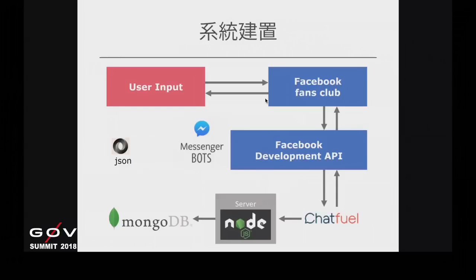資料正規化之後，我們要想辦法讓系統開發成一個資訊系統。除了標準的網頁查詢介面之外，如果可以形成比較像聊天機器人的模式，使用者在使用這個系統上會比較容易克服過去傳統的幾個問題。